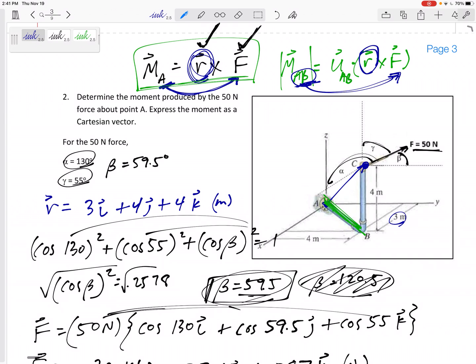And it's actually from anywhere on the axis to anywhere on the line of action of the force. So sometimes you have some options. For example, if this was finding the moment about the AB axis, I could go from A to C or B to C.